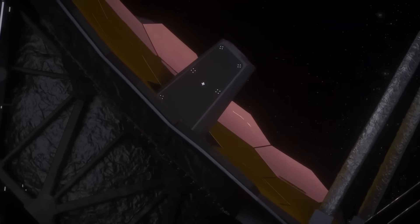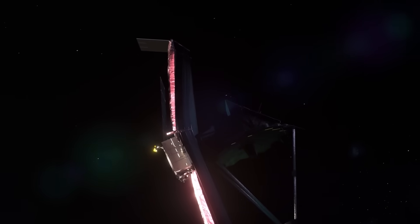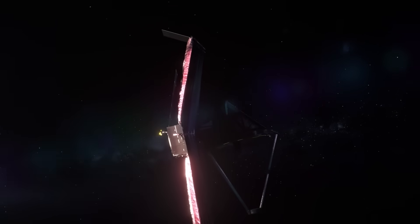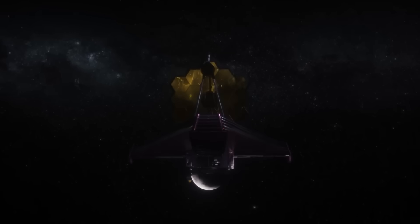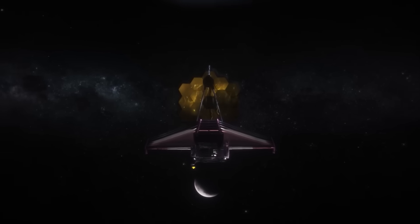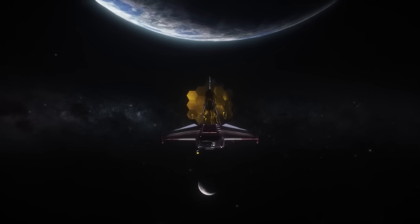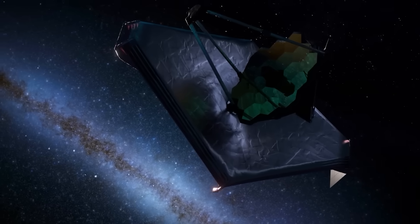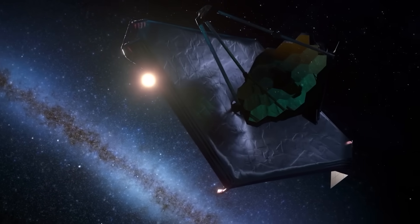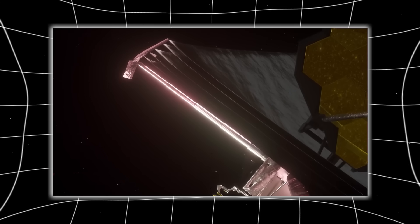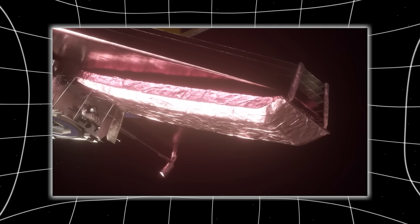As the James Webb Telescope continued observing the mysterious structure, something began to happen, something no one could explain. Webb's instruments, calibrated to detect the faintest light from the early universe, started to lose alignment. The mirror segments, perfectly synchronized for months, began subtly shifting on their own, as if responding to an invisible force. Engineers on the ground thought it was a software glitch, but telemetry confirmed the movements were real, initiated by automated systems compensating for distortions that shouldn't exist.